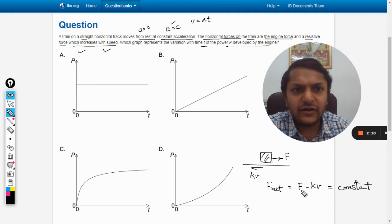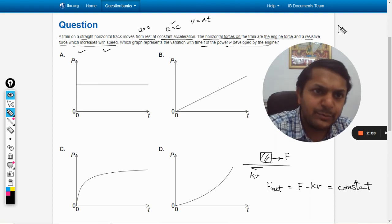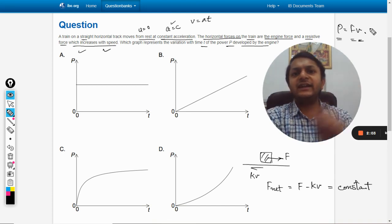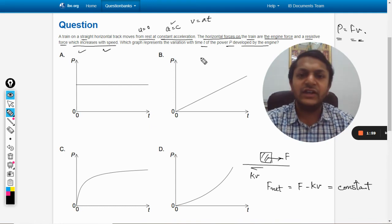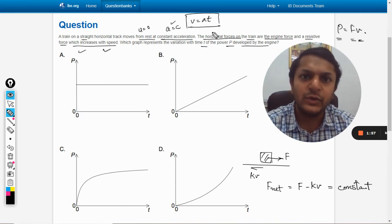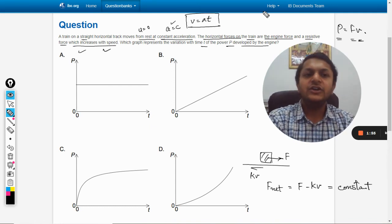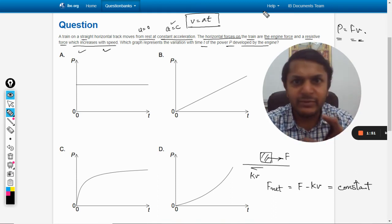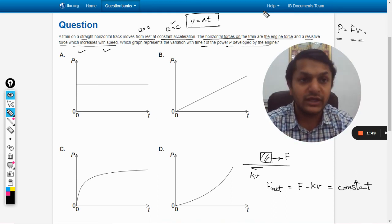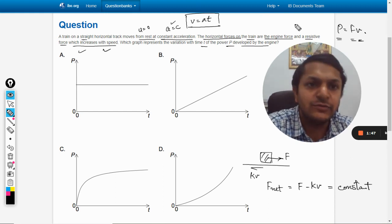We also know that power P equals F times v, so instantaneous power is related with instantaneous velocity. We know that velocity is a variable and v equals at. We can substitute it here to find the instantaneous power. Power will be a variable - we have to talk in terms of instantaneous values.